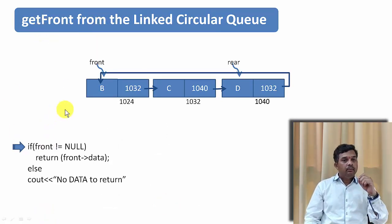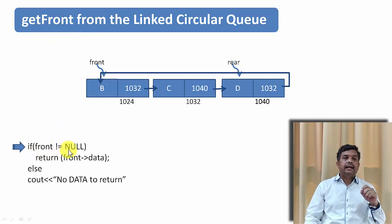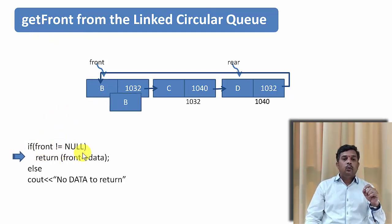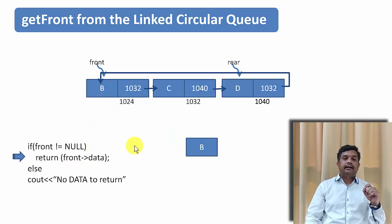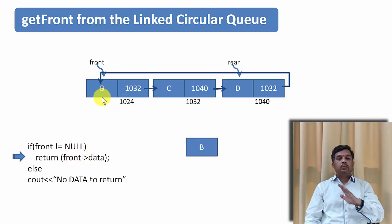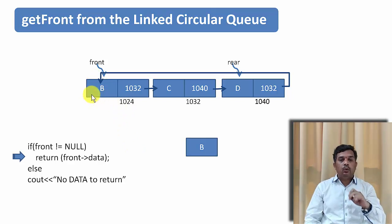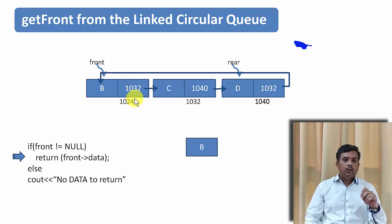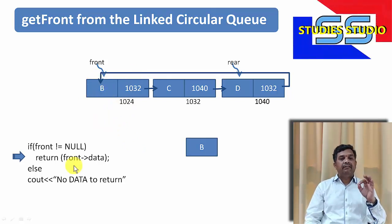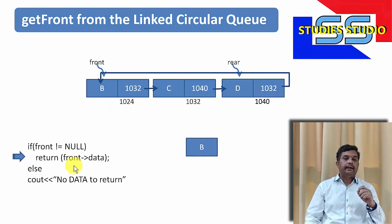Now there is one more function — get front. If front is not null, we return front's data. We are not going to delete the node; only the value available in that particular node will be returned.